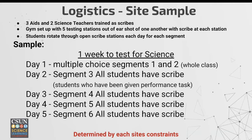Here is a sample of site logistics. This is a site in LA that is choosing to train three aides and two science teachers as scribes, meaning they are familiar with the CAST testing videos that the LEA can share through Moodle, or they've proctored a CAST test before. They've also read the protocol document and signed that they have read and understand what they are supposed to do as a scribe.